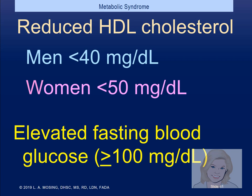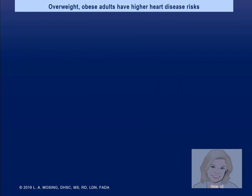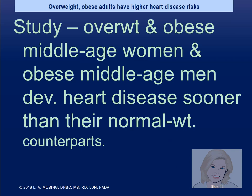Are men more likely to have metabolic syndrome? As we get older, are we more likely to have it? The answer is women are more likely to have it because of extra body fat. As we get older, our metabolic rate declines, body composition changes — less muscle and more fat. Overweight and obese adults probably won't live as long as their normal weight peers, and obese middle-aged men and women develop heart disease sooner.